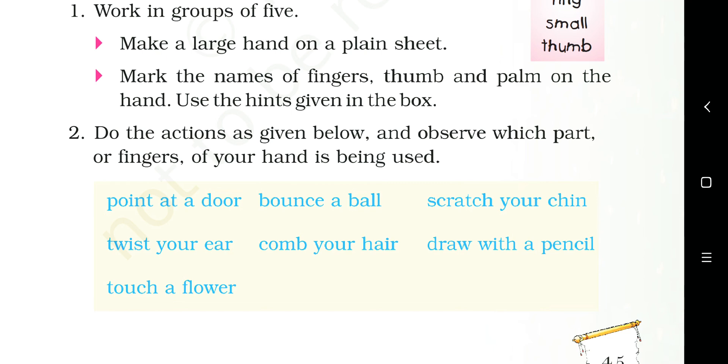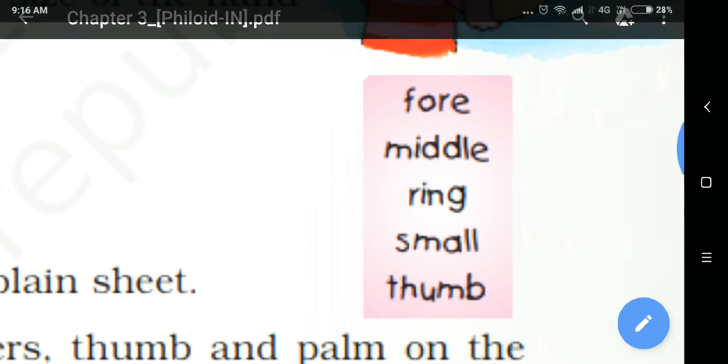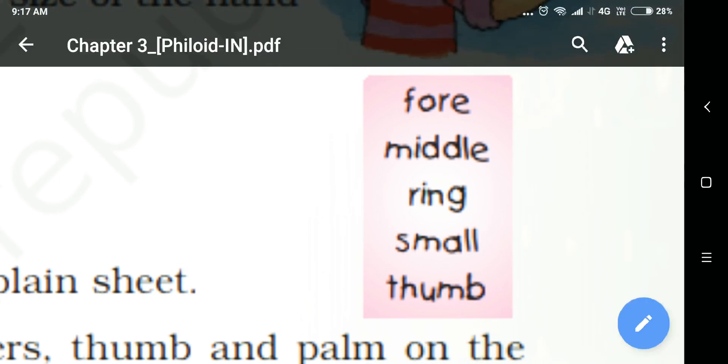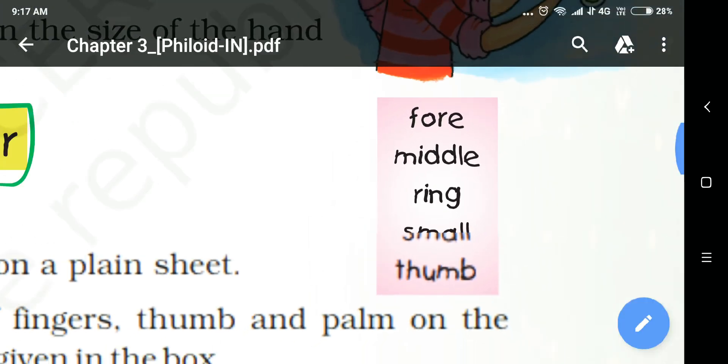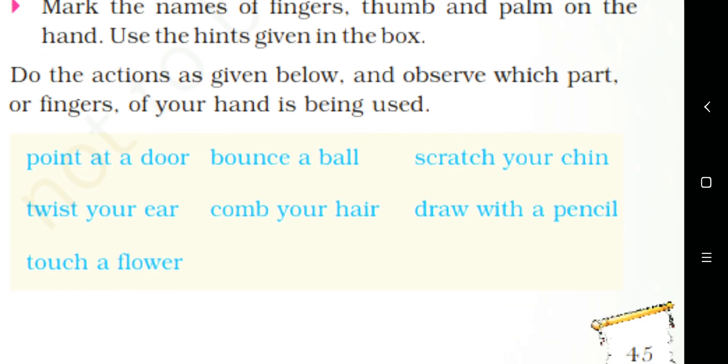So first part is point at a door. Whenever we point at a door or maybe point at some person or point at some area, we usually use forefinger. It's written on this in this box - we call this forefinger or index finger. You can see which finger is called forefinger or index finger from the photograph.